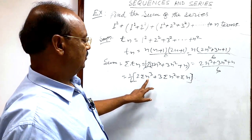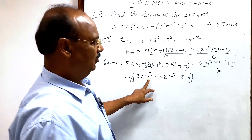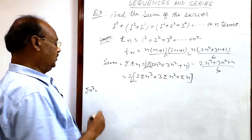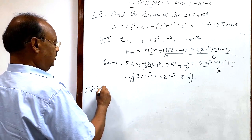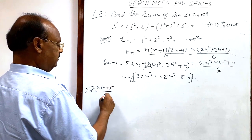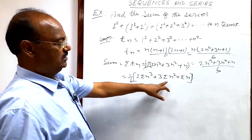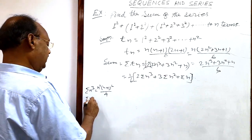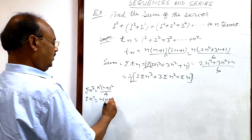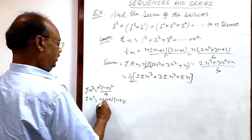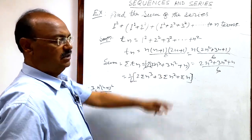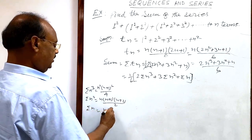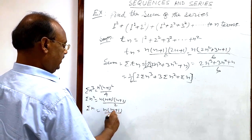Now we will use the standard formulas. Sigma n³, the sum of cubes of the first n natural numbers, is n²(n+1)² divided by 4. Sigma n², the sum of squares, is n(n+1)(2n+1) divided by 6. And sigma n, the sum of the first n natural numbers, is n(n+1) divided by 2.